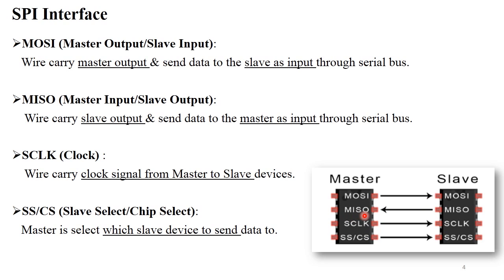For MISO, master input slave output: after receiving data from master, slave sends a response to the master. That's why it is called slave output, and this slave output is considered as master input, with the arrow going from slave to master. For SCLK serial clock, master sends clock signal to the slave, which activates the slave. Since there are multiple slaves, master always sends clock signals to slave. The slave select and chip select pin is used because there is only one master and multiple slaves — it gives direction to the particular slave.